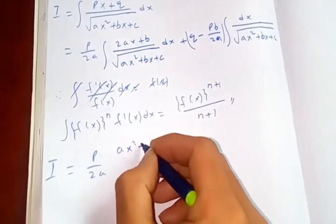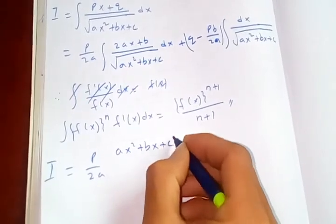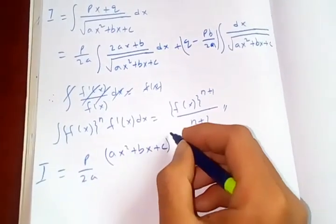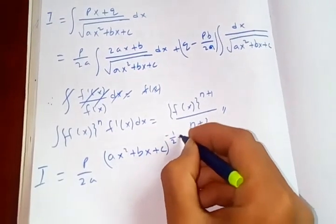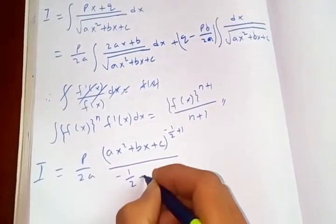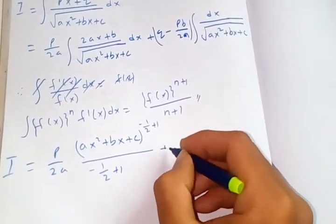you get ax square plus bx plus c to the power negative half plus one over negative half plus one, plus